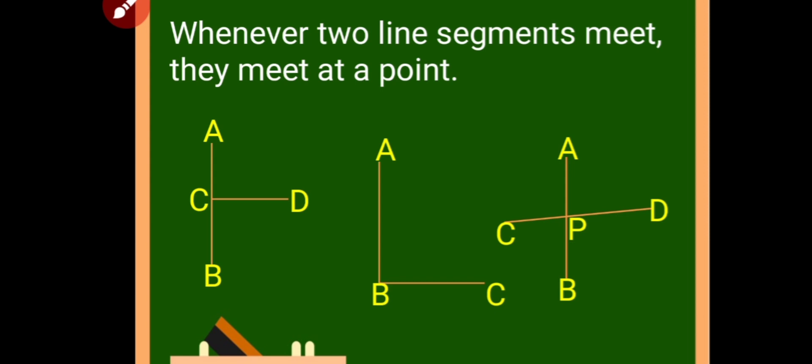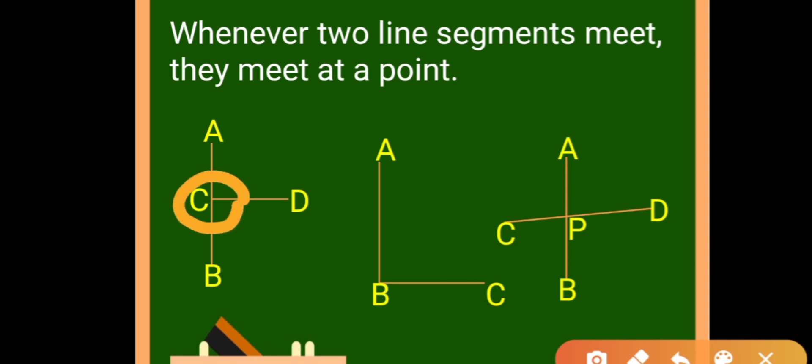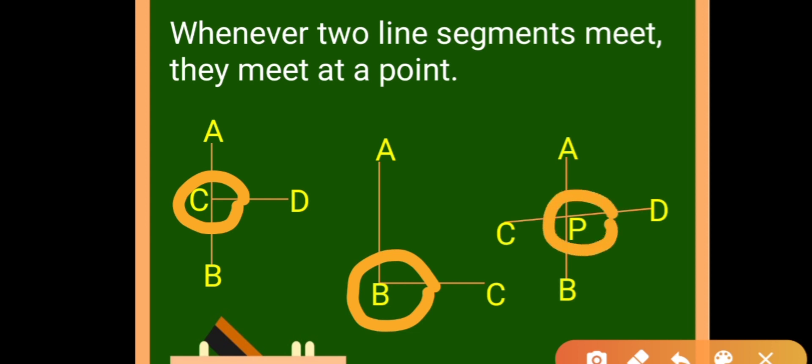Whenever two line segments meet, they meet at a point. Here two line segments are meeting at point C. In figure number two, the lines are meeting at point B. In figure number three, the two lines AB and CD are meeting at point P. So if two line segments meet, they will meet at a particular point.